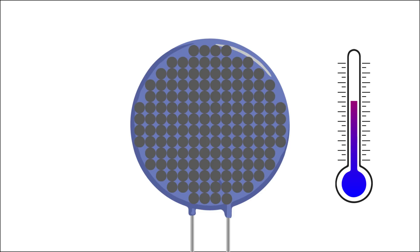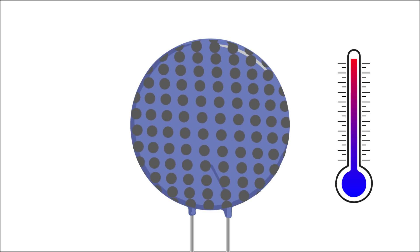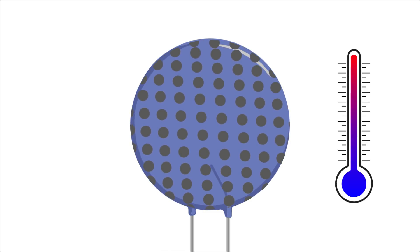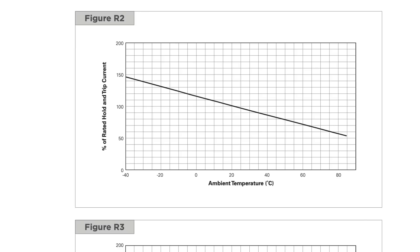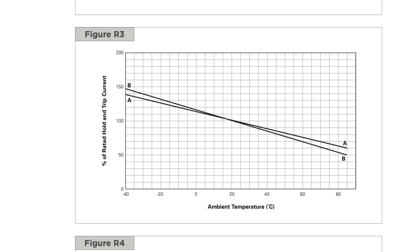As the thermistor heats up, the plastic expands, pushing the grains farther apart, increasing its resistance. PPTCs have near-linear temperature resistance curves.